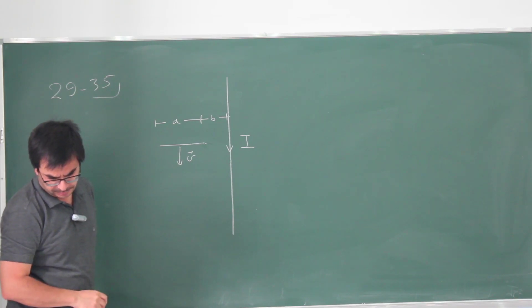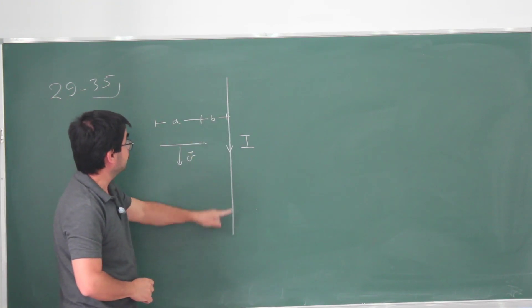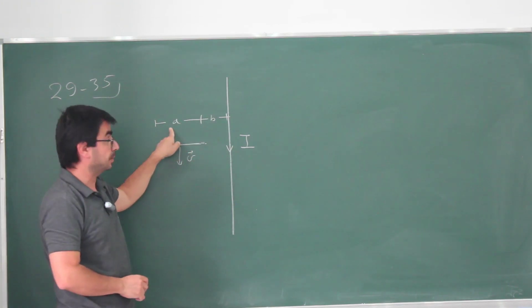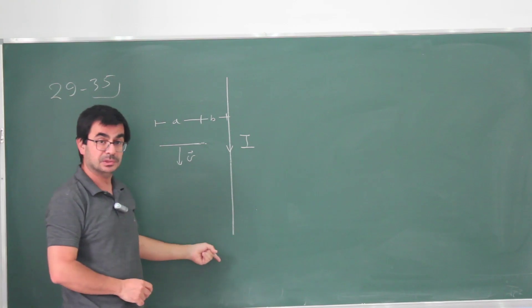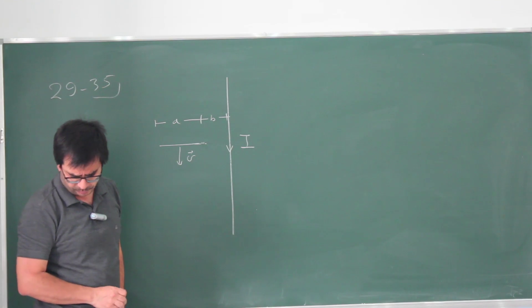The length of this wire is very, very long with respect to other length scales in the problem, meaning that we can essentially take this to be infinite. So we can use the formulas that we know for an infinite current-carrying wire. It produces a certain magnetic field.